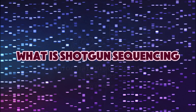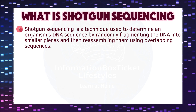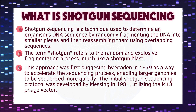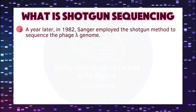Shotgun sequencing is a technique used to determine an organism's DNA sequence by randomly fragmenting the DNA into smaller pieces and then reassembling them using overlapping sequences. The term 'shotgun' refers to the random and explosive fragmentation process, much like a shotgun blast. This approach was first suggested by Staden in 1979 as a way to accelerate the sequencing process, enabling larger genomes to be sequenced more quickly. The initial shotgun sequencing protocol was developed by Messing in 1981, utilizing the M13 phage vector. In 1982, Sanger employed the shotgun method to sequence the phage lambda genome.